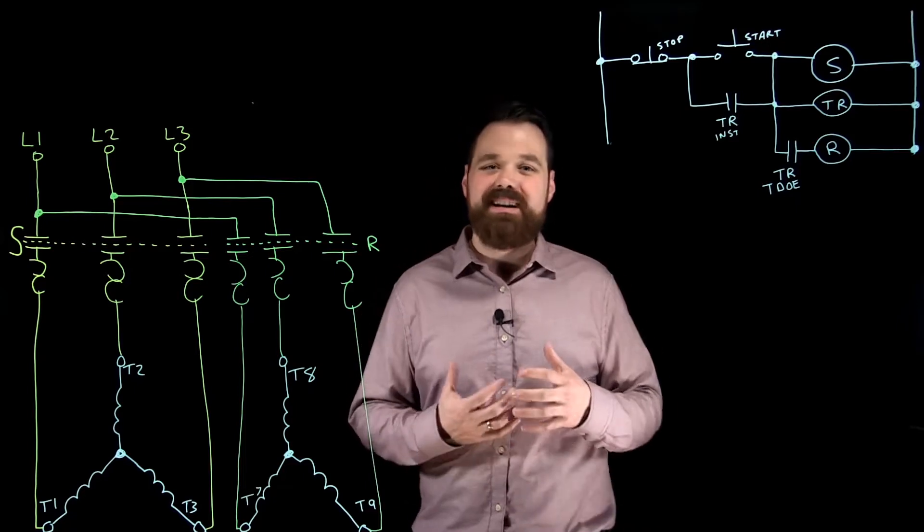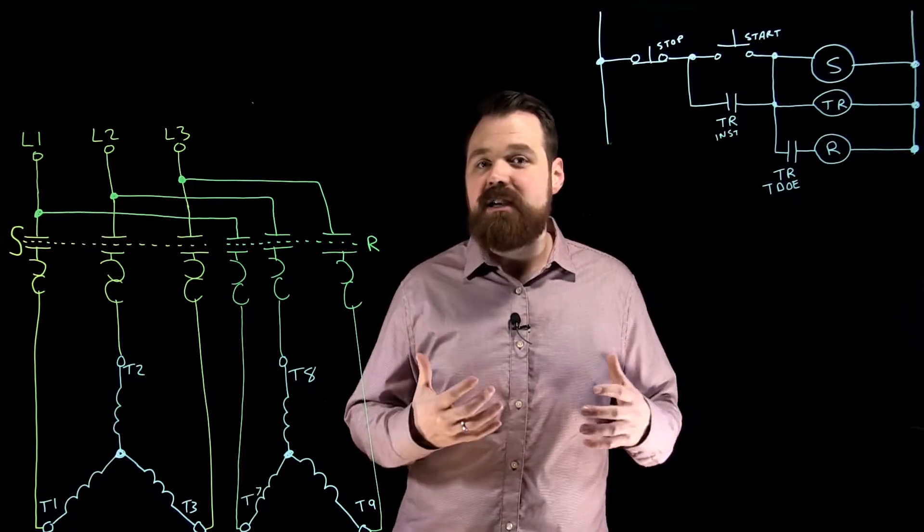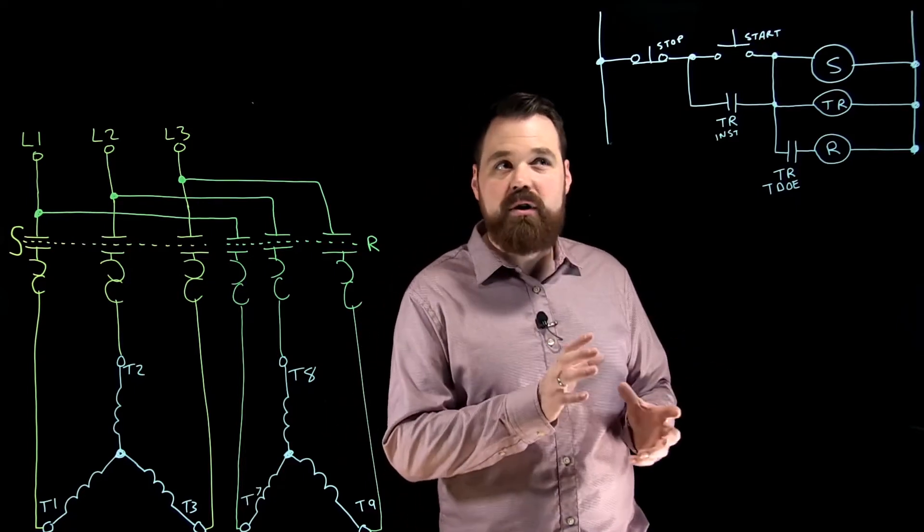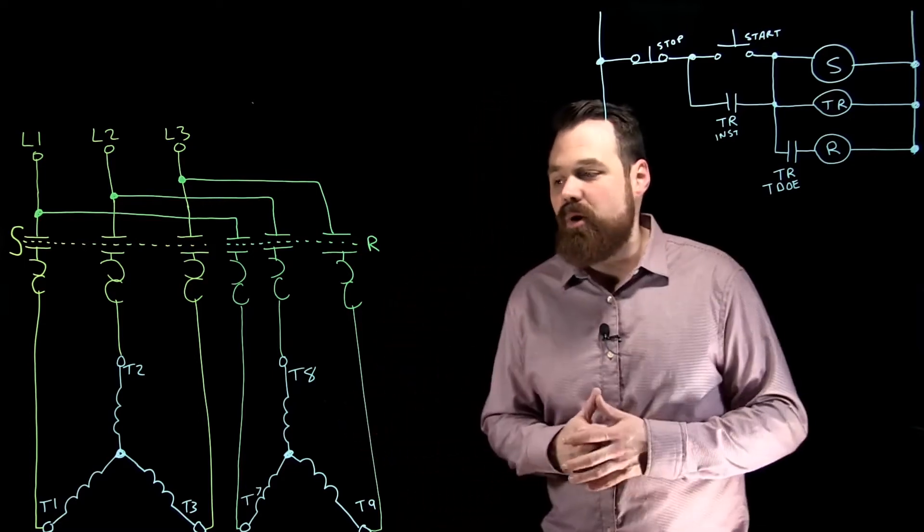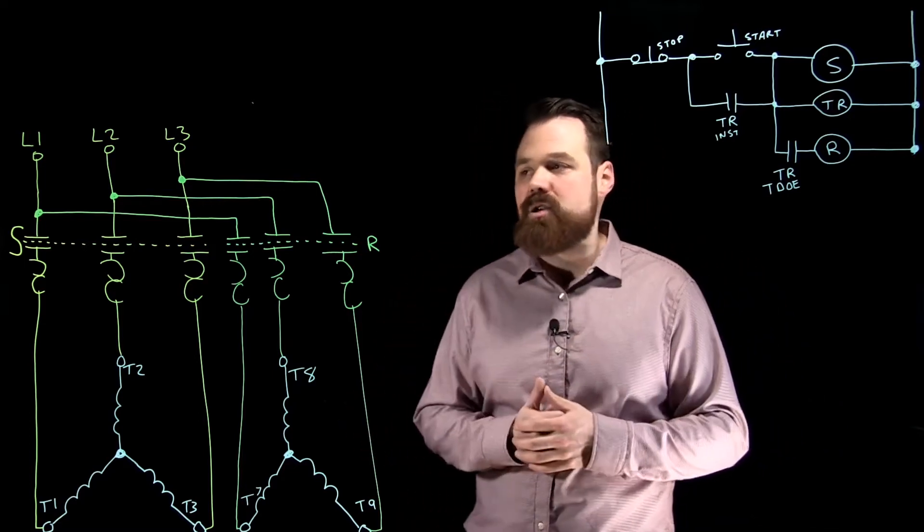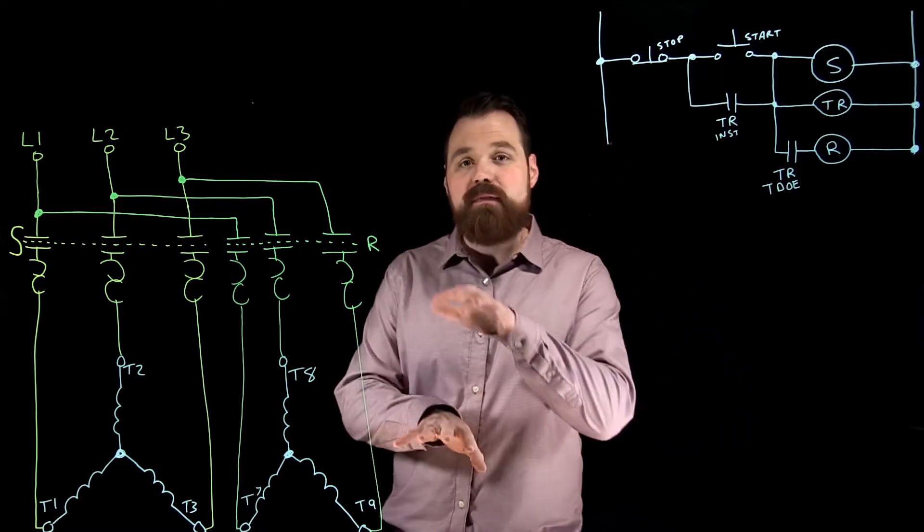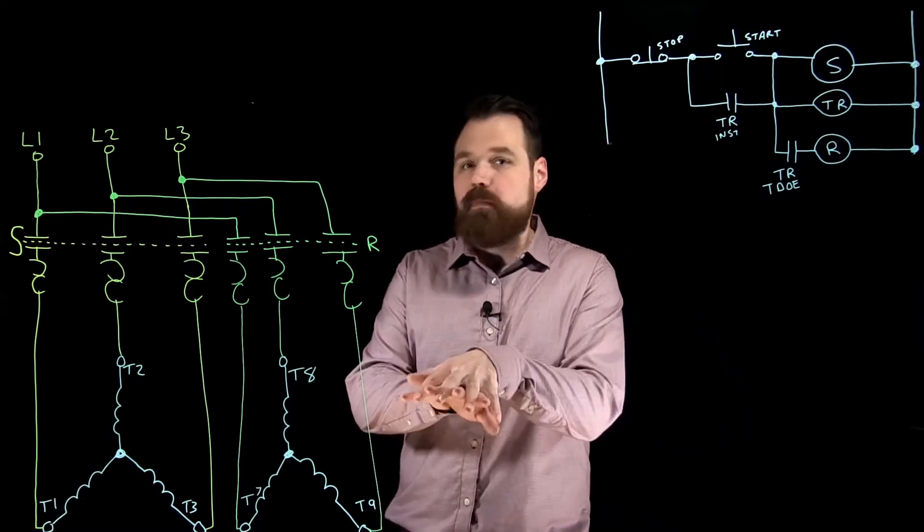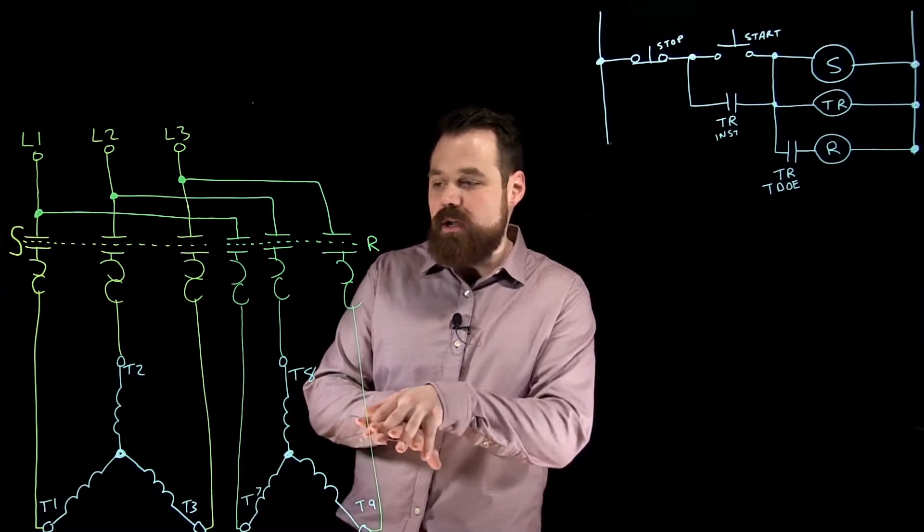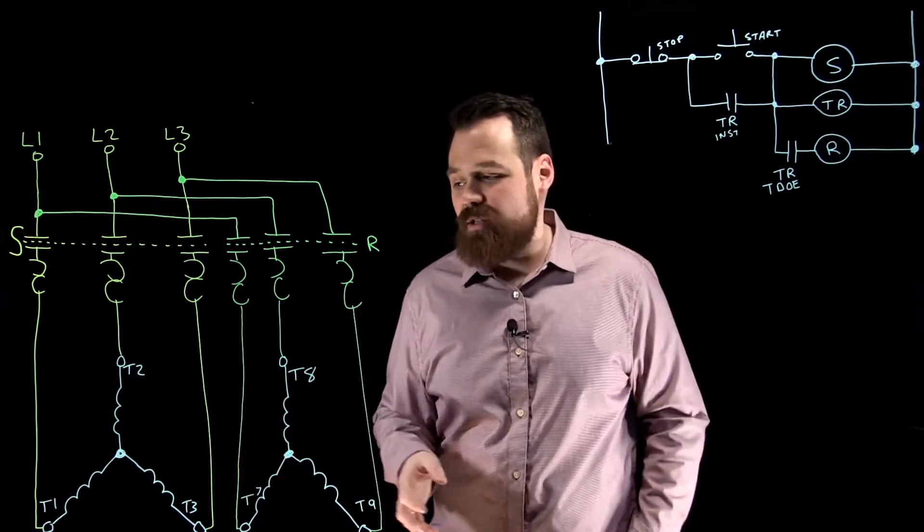So with this part winding starter, it is a specific type of motor, so you want to ensure that your motor can do part winding starting. Essentially how it works is the motor has two different windings in parallel on top of each other, usually in this Y formation like this.